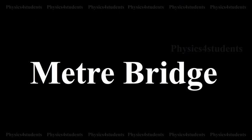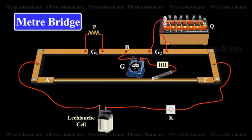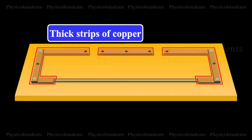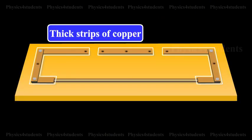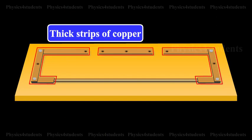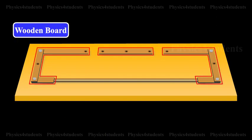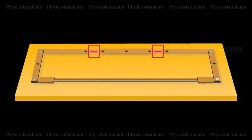Meter Bridge, one of the forms of Wheatstone's bridge. It consists of thick strips of copper of negligible resistance fixed to a wooden board. There are two gaps, G1 and G2, between these strips.